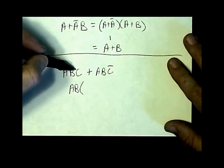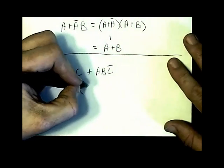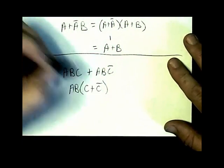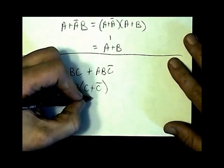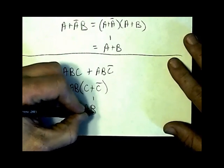I'm going to write down what's left: AB, C plus not C. C plus not C, one plus one. One plus its opposite is one. My answer is AB.